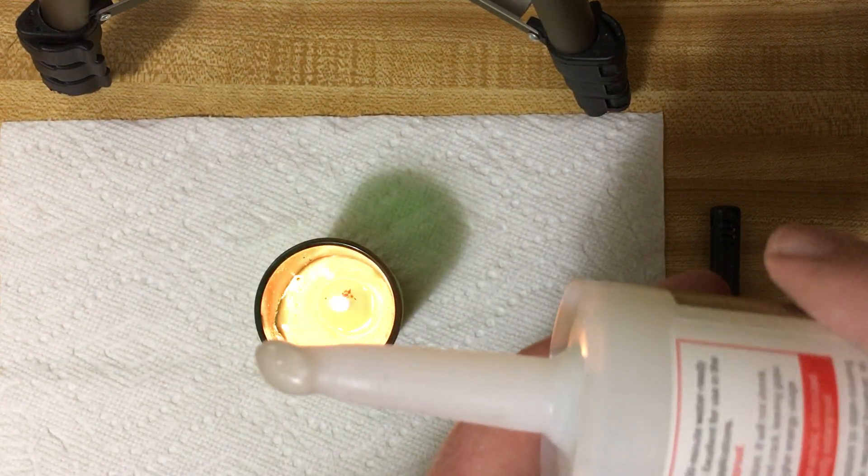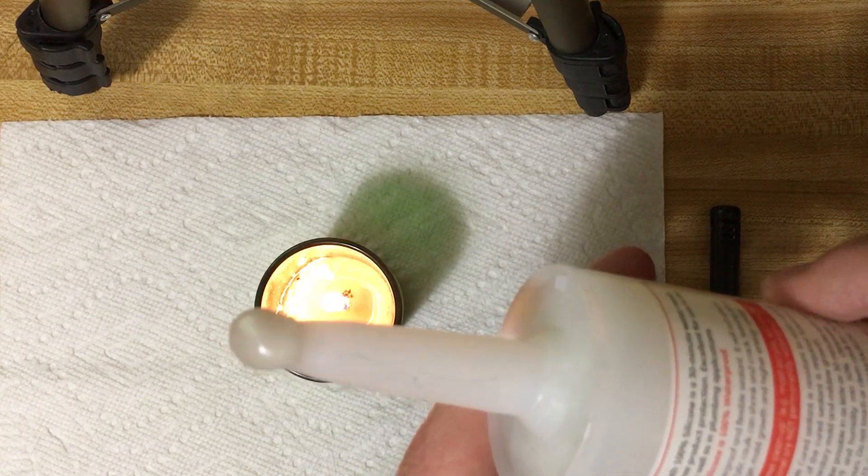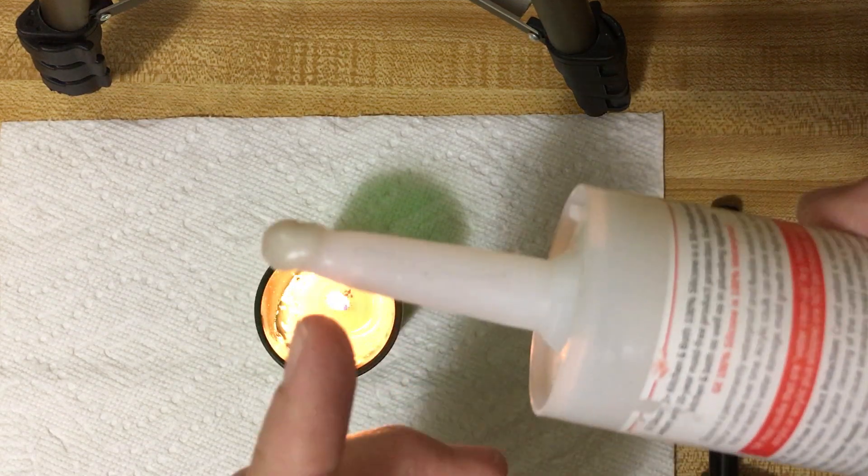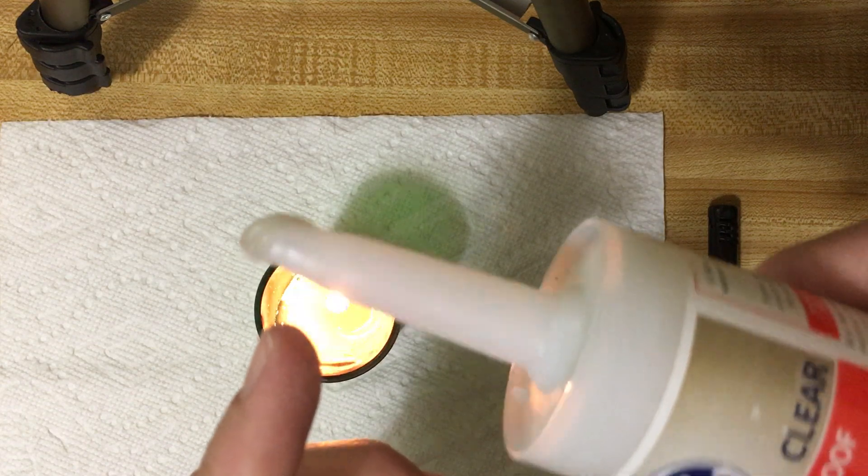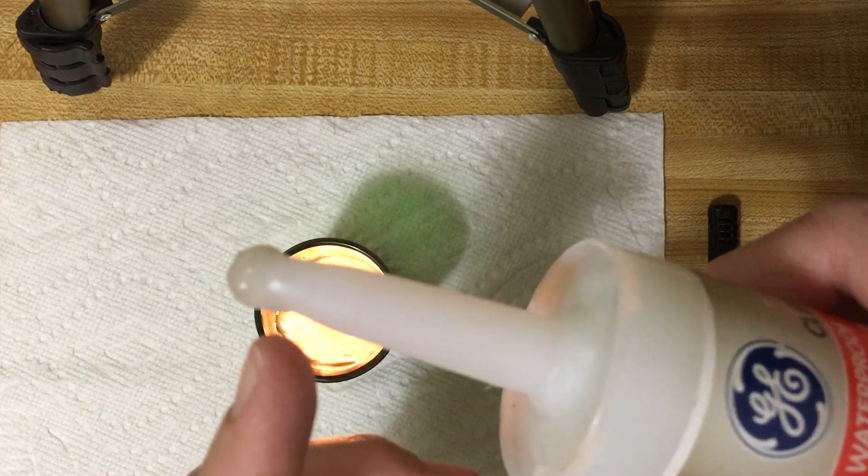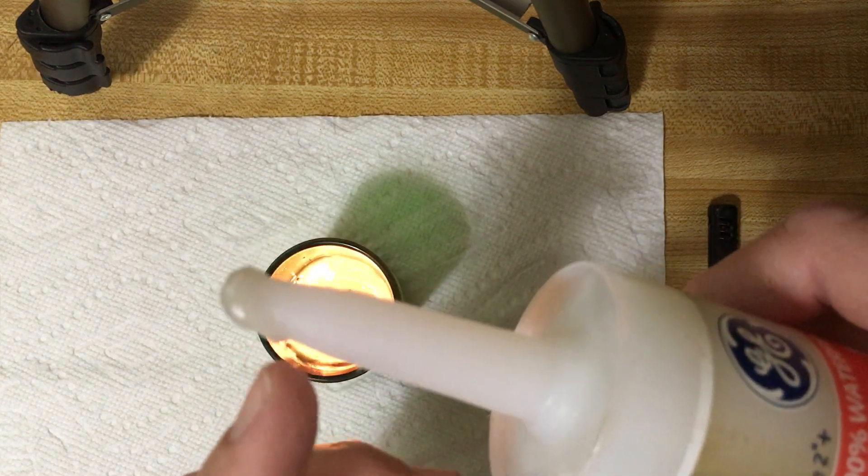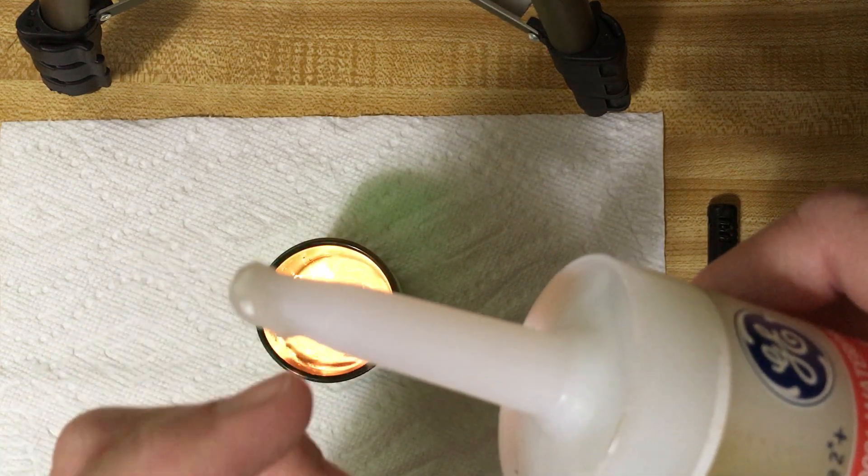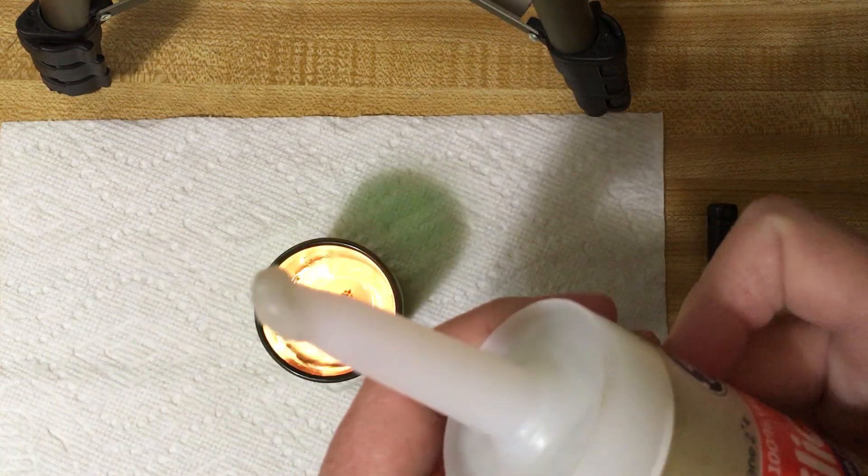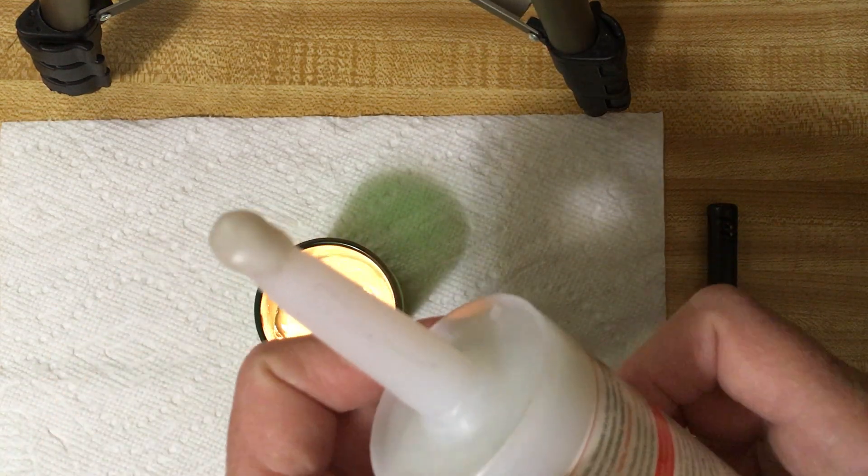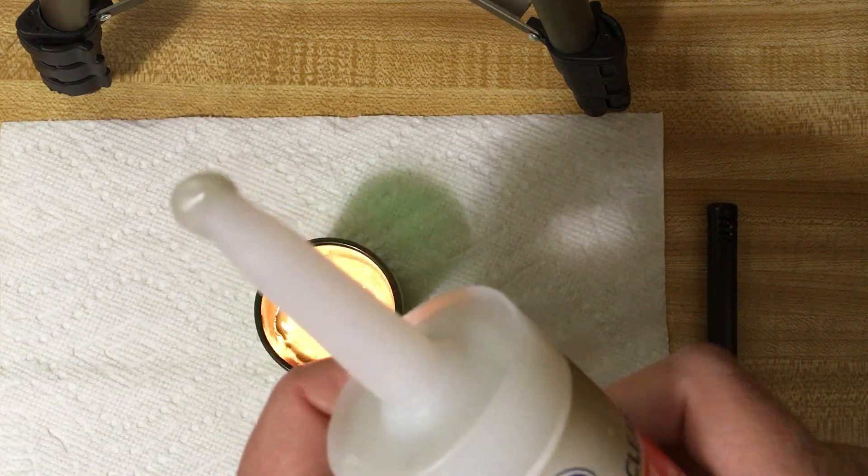See what that does? Forms a nice seal along that caulking tip. Don't put just a little - make sure it's a nice good-sized bead of that wax around there. It seals it off from air getting in and hardening your caulking.